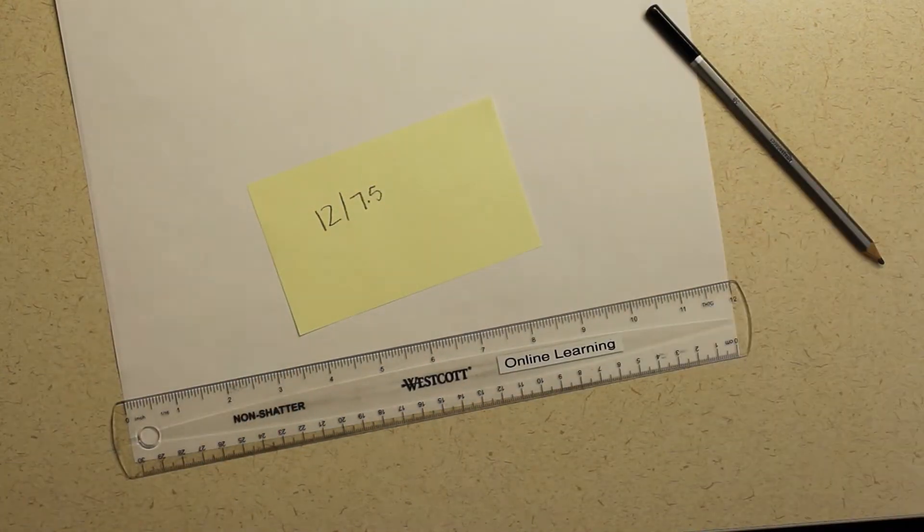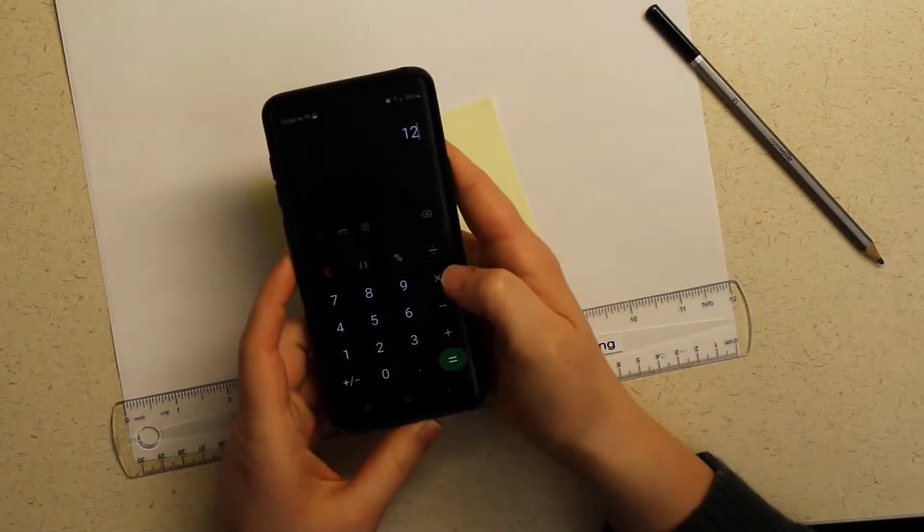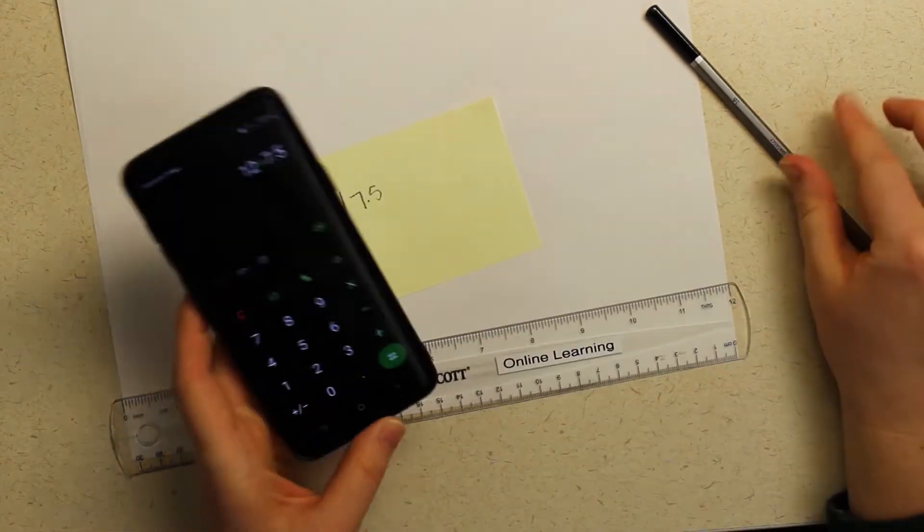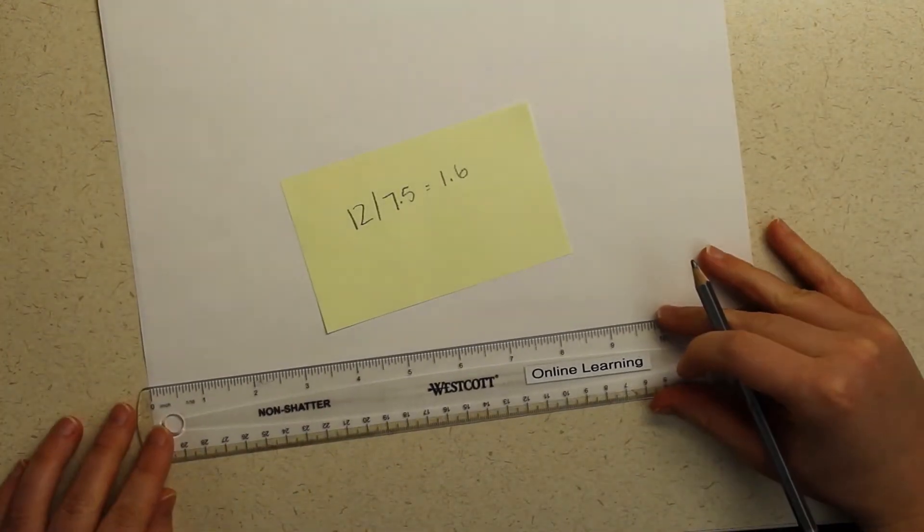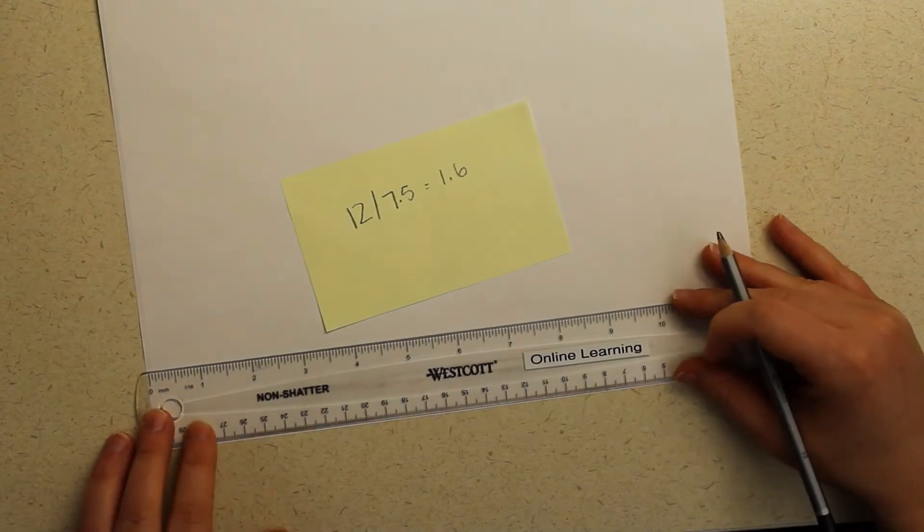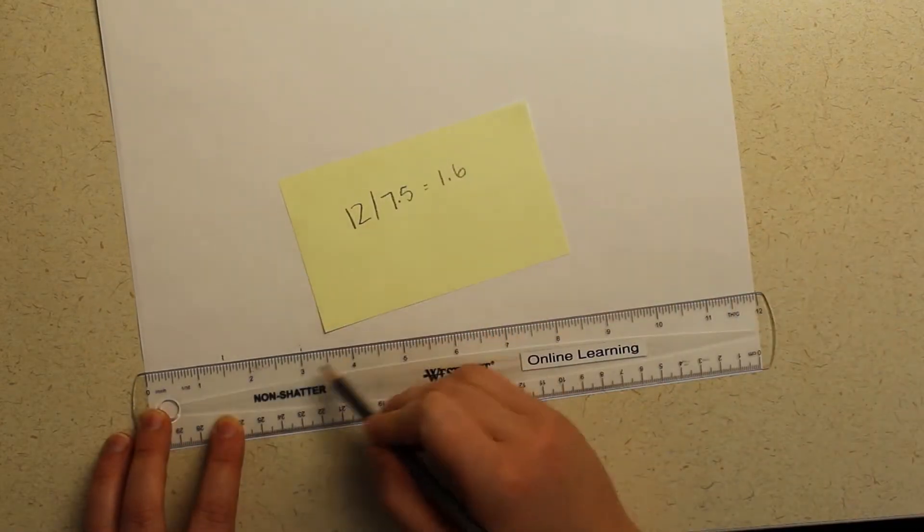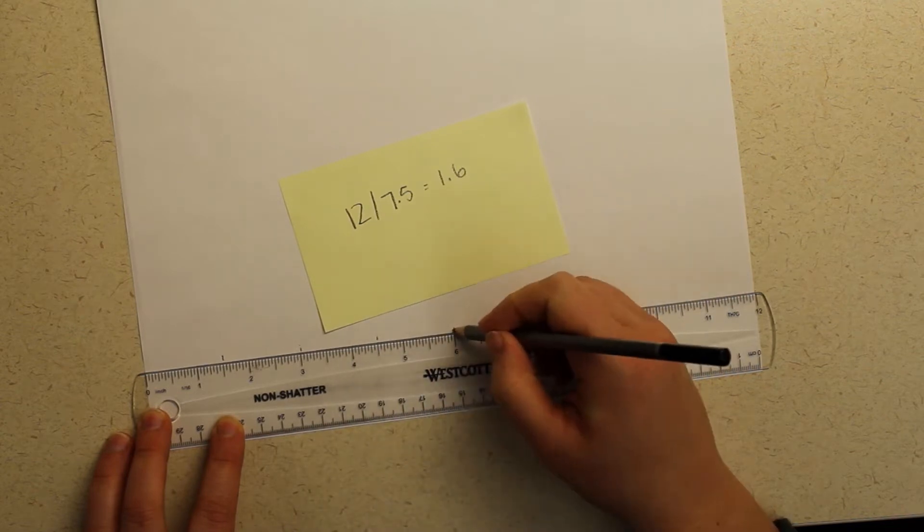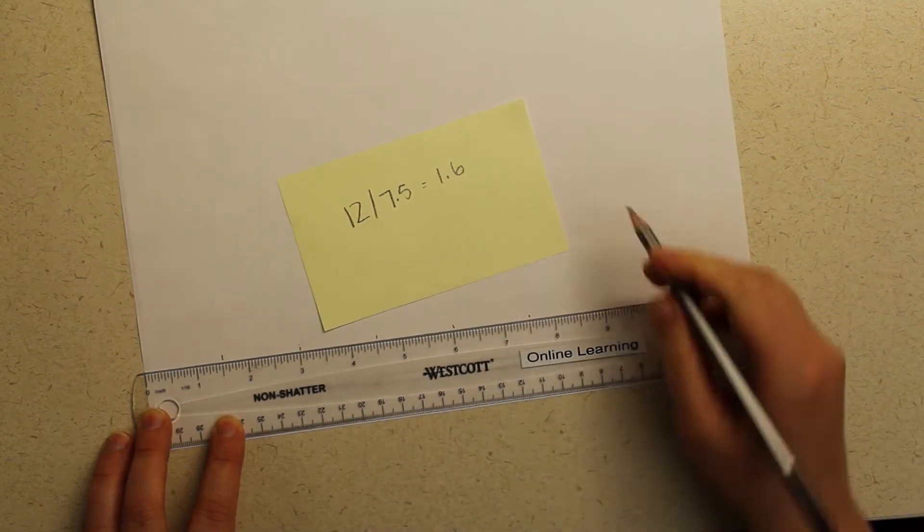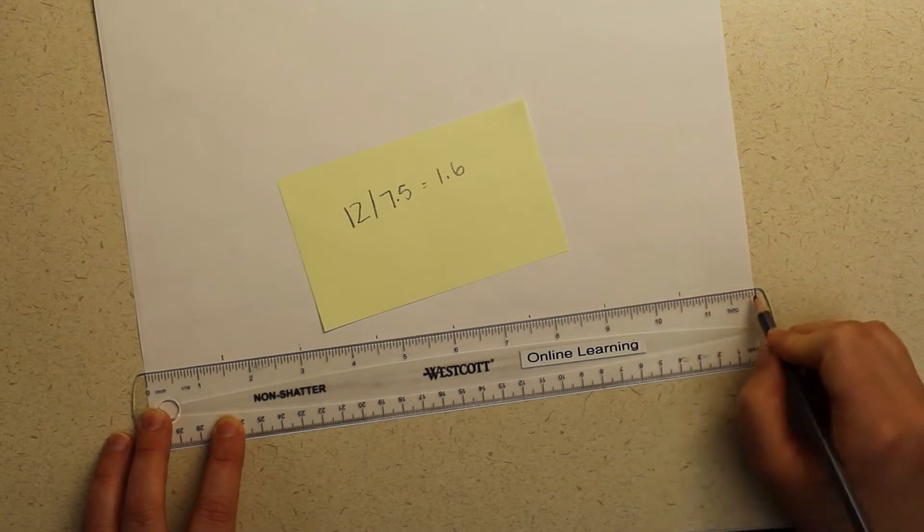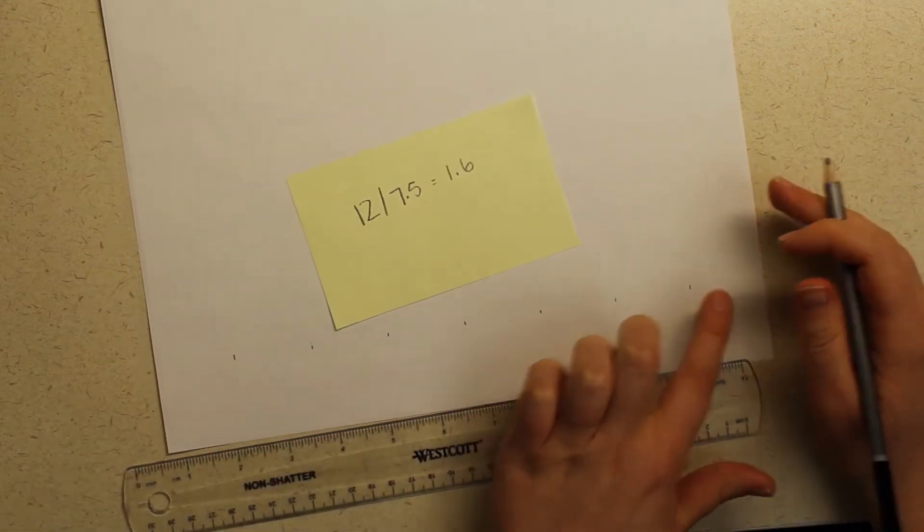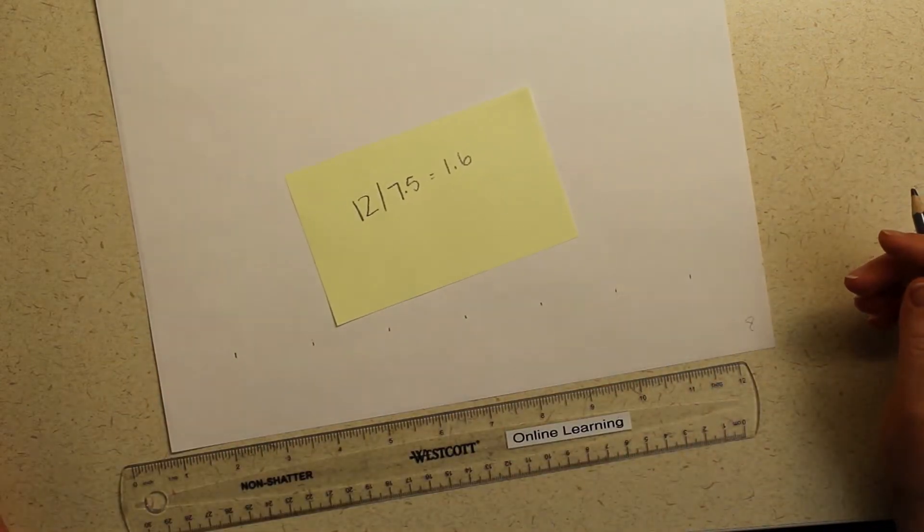I take the 12, which is the length of the paper that I'm drawing on, and I divide it by 7.5 because from top to bottom I had 7.5 squares that I wanted to use for my picture. If I were to use 1.6 inch boxes then the image would go all the way from the bottom to the top of the page.